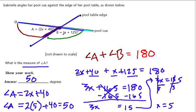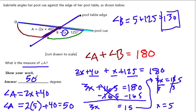And if we had to figure out B, right, it would be 5 plus 125. Angle B equals 5 plus 125. And that's 130. And you can see it, right? 130 plus 50 does give us the straight line of 180 degrees.